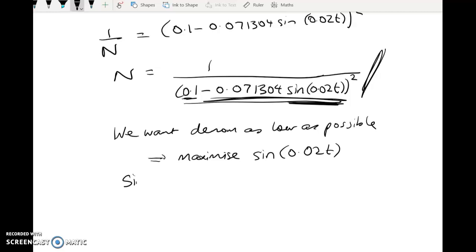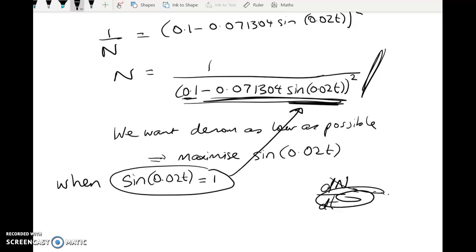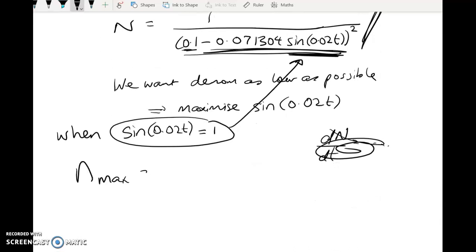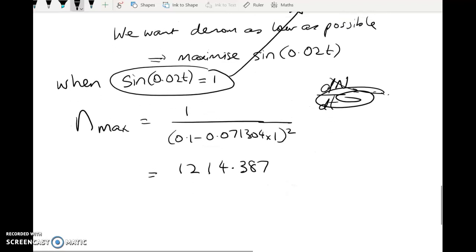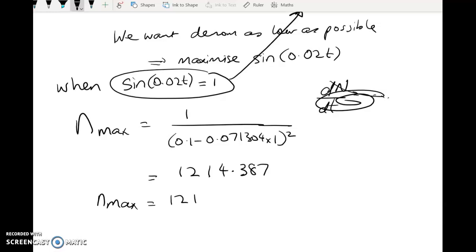And that will happen, so the biggest possible value of that will be when this equals 1. So notice you weren't asked when this happens, you were just asked what's the highest number of insects. So if you wanted to figure out when it happens, then you have to differentiate. You go back to dN by dt equals blah blah and you set that equal to 0. We don't have to do all of that. All we have to do is to take this and substitute it in here. So N max is going to equal 1 over 0.1 minus 0.071304 times 1 squared. And when I did that, I got 1,214.387, and I rounded that to this too.